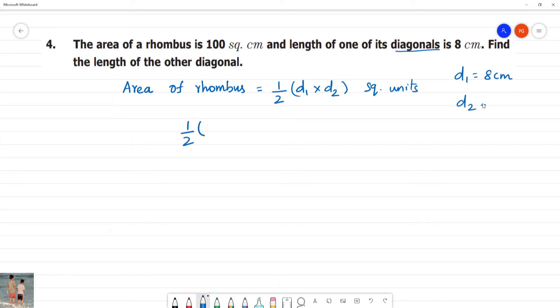Diagonal 2 is equal to what we need to know. Half into 8 centimetre into diagonal 2 is equal to area of rhombus which is 100 square centimetre.